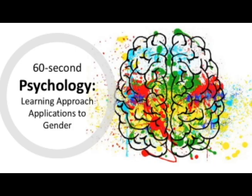Similarly to the social approach, the learning approach explains how gendered behaviour is influenced by our environment through social learning theory and operant conditioning. Operant conditioning is the concept that behaviour is learned by consequence. If a behaviour is followed by reinforcement, it is more likely to be repeated, and if it is followed by punishment, it is less likely to be repeated. This includes gendered behaviour.